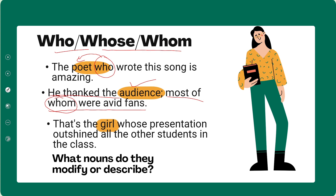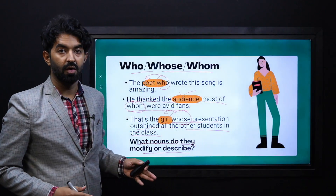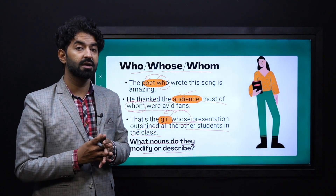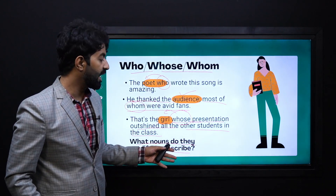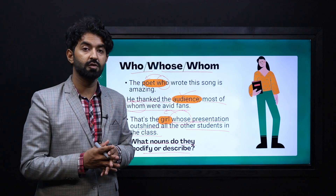Example for 'whose': 'That's the girl whose presentation outshined all the other students in the class.' This relative pronoun refers back to the subject, the noun. The relative clause here is 'whose presentation outshined.' These relative pronouns are modifying the nouns that are highlighted.